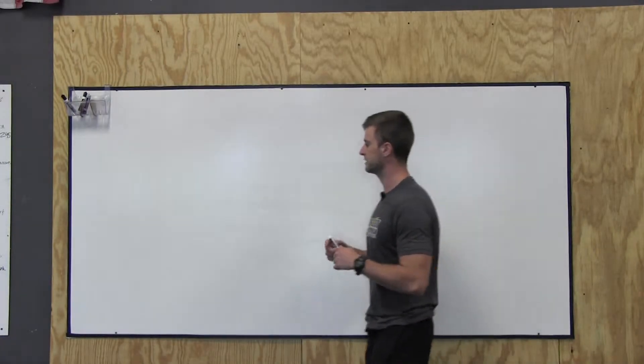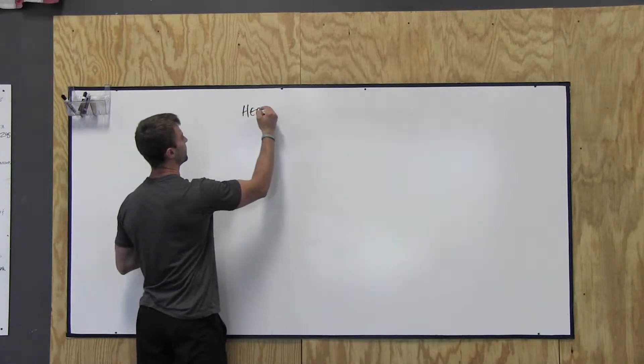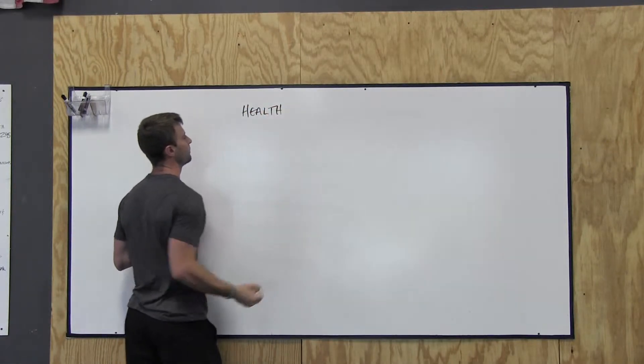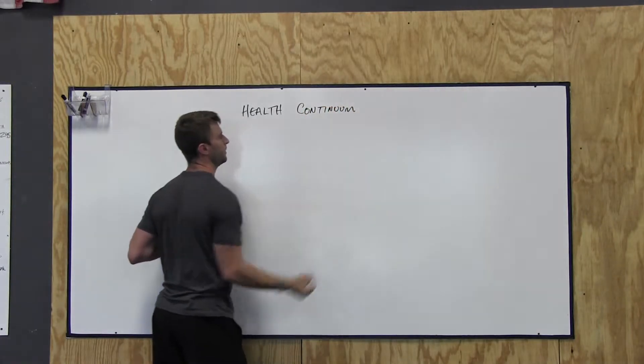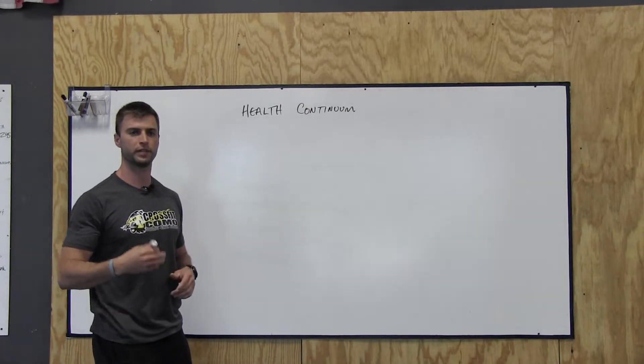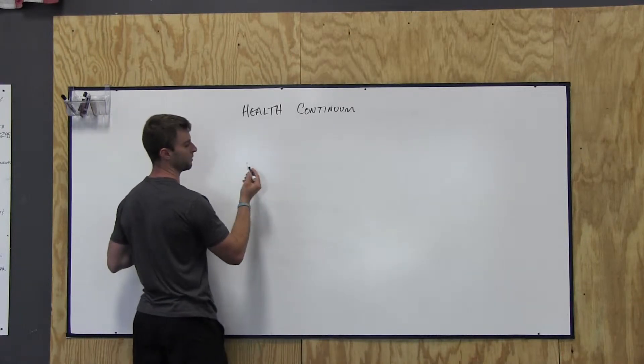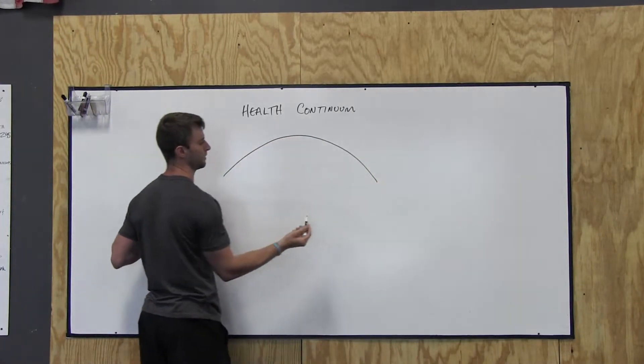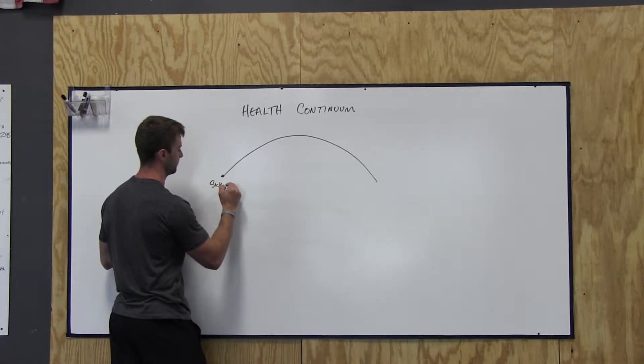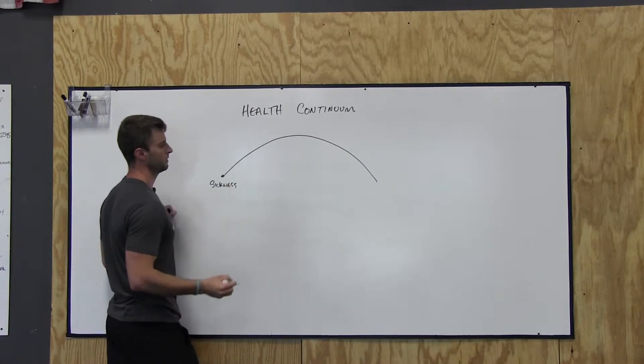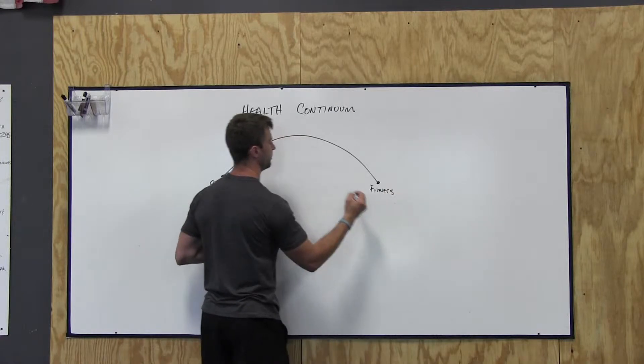Alright, so in CrossFit we have this thing called the health continuum. I'll write that up here. Basically this is a good way to think about health, to look at it as almost like a bank account, like a savings account. So I'm going to draw up here what's called the health continuum. And there's three points along this continuum. On one side you have sickness. On one side you have fitness. The middle you have wellness.